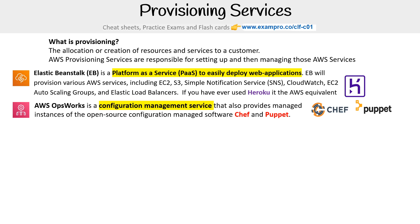Then you have OpsWorks. This is a configuration management service that also provides managed instances of open-source configuration managed software such as Chef and Puppet. You say I want to have a load balancer or I want to have servers, and it will provision those for you indirectly.